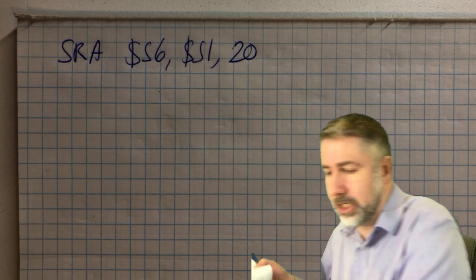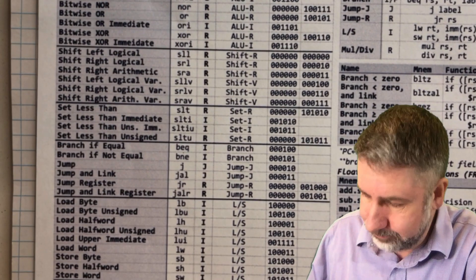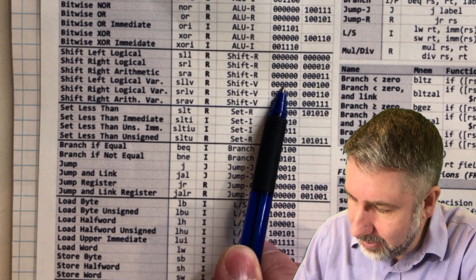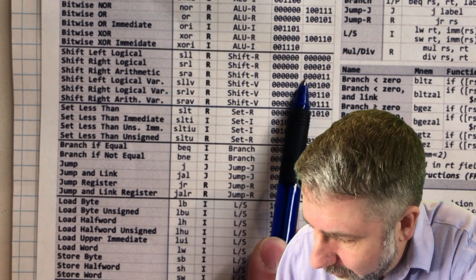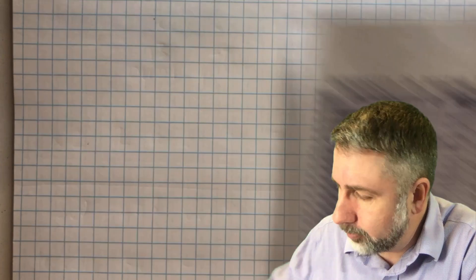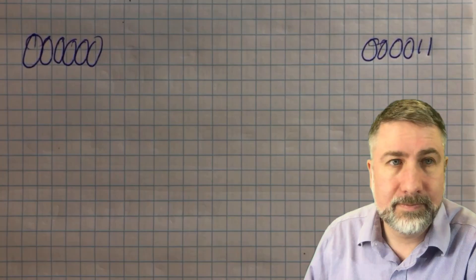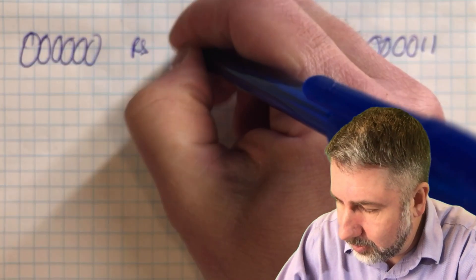So SRA S6, S1, 20. Check the sheet for the opcode. SRA — shift right arithmetic — is an R-format instruction. The opcode is 000000 and the function code is 000011. For R-format, the fields are: opcode, RS, RT, RD, shift amount, and function code. So opcode is 0 and funct code is 3.